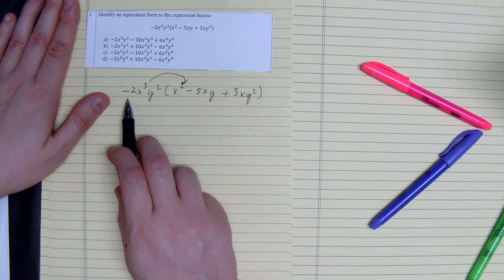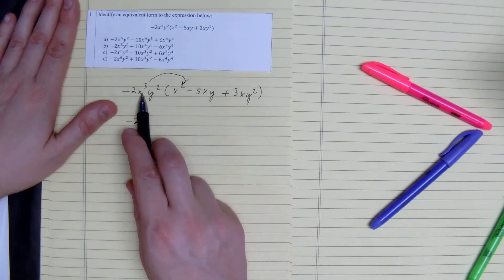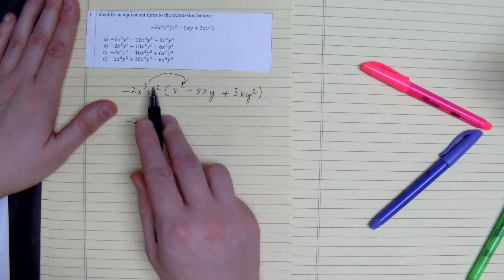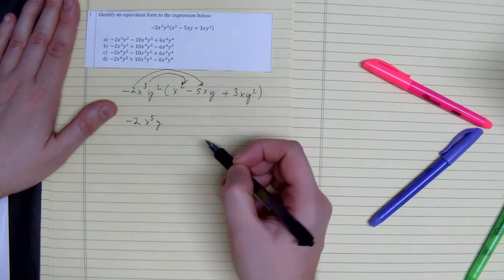So what we have here is negative 2 times 1 would give us negative 2. x cubed times x squared would be x to the 5th. y squared just becomes y squared, and we distribute again.